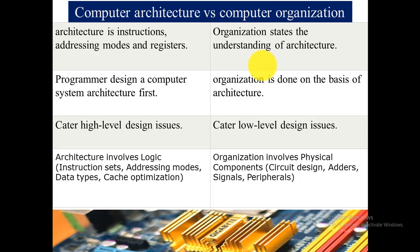The sixth difference is that computer architecture caters to high-level design issues related to instruction sets, addressing modes, data types, and cache optimization, while computer organization caters to low-level design issues related to circuit design, adders, signals, and peripherals.